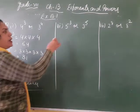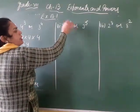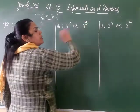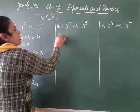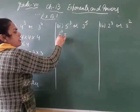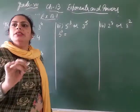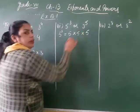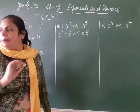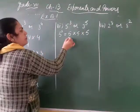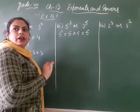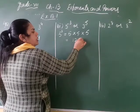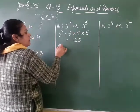Now the next part is similar. We have 5 raised to power 3 and 3 raised to power 5. Let's expand 5 raised to power 3 — that means we multiply 5 by itself 3 times. 5 fives are 25, and 25 fives are 125.